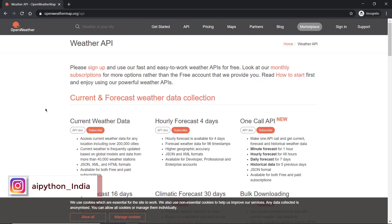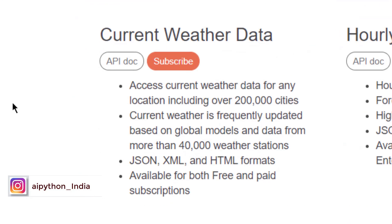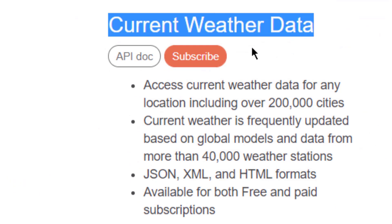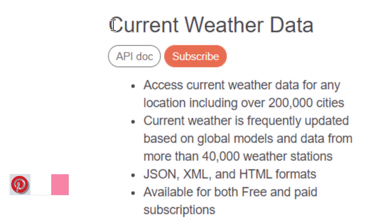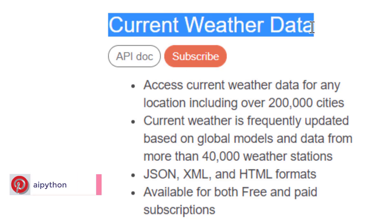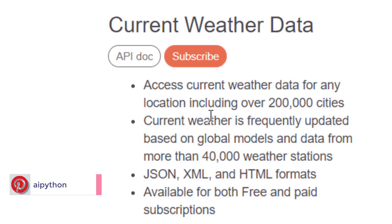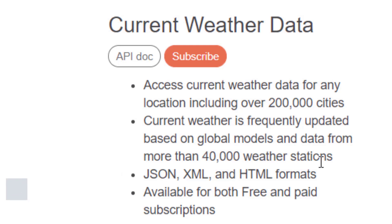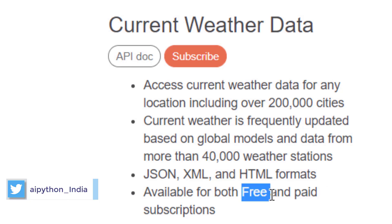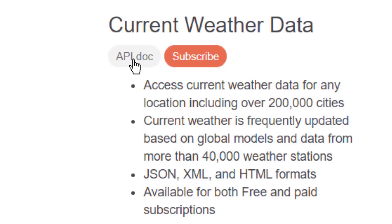For this video we will focus on current weather data — the exact current weather for a particular location. To summarize: you can access current weather data from 200,000 cities across the globe and from 40,000 weather stations. The API response is available in JSON, XML, or HTML format. This plan is available for both free and paid users. We can have a look at the API documentation.